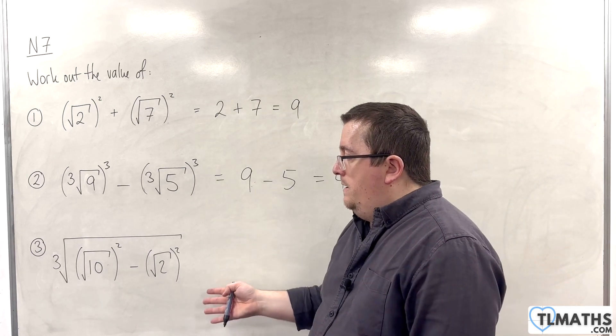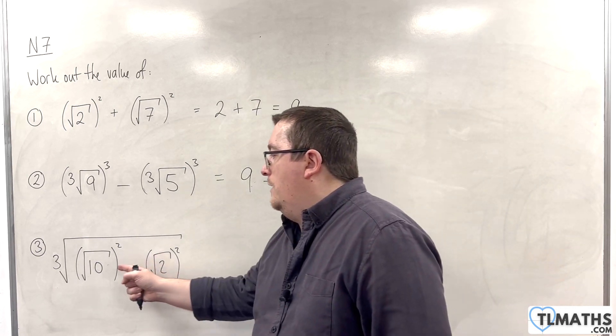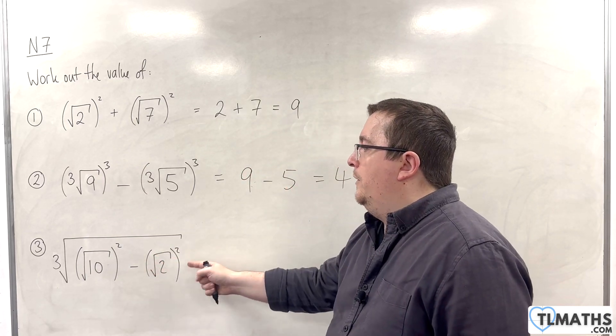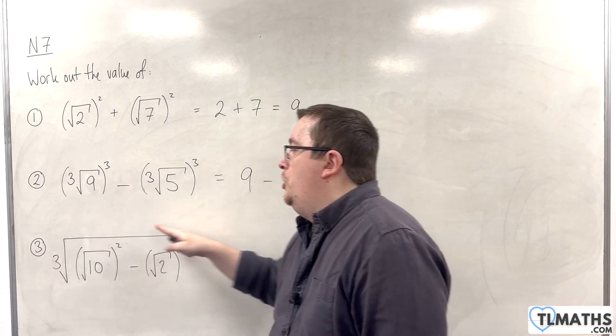So, number 3, in this one, we have square root of 10 all squared, take away the square root of 2 all squared, all being cube rooted.